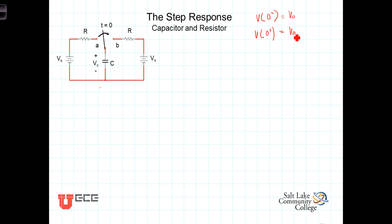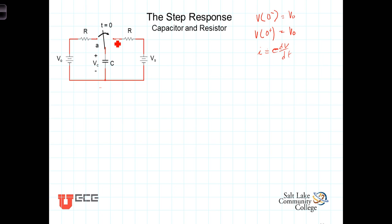Just to remind ourselves, the current flowing through this new circuit is going to be I equals C dV/dt, after the switch closes.